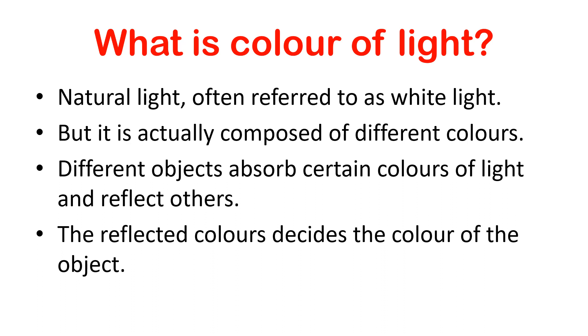What is the color of light? Natural light often referred to as white light, but it is actually composed of different colors. Different objects absorb certain colors of light and reflect others. The reflected color decides the color of the object.